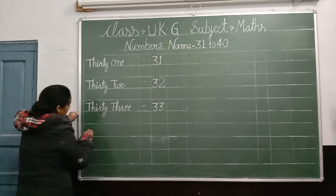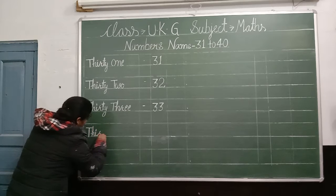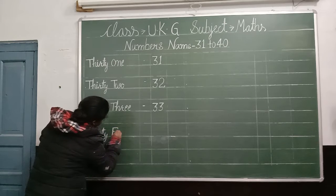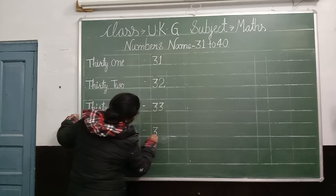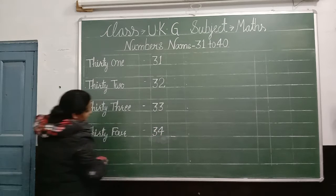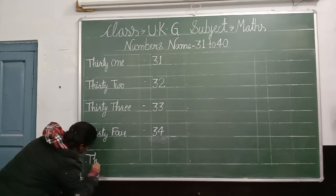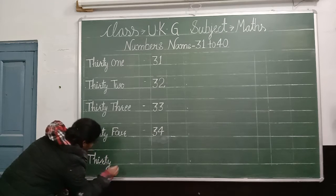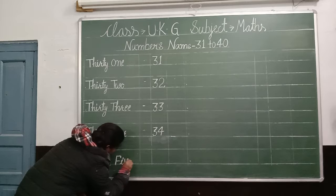Thirty-three: T-H-I-R-T-Y. 33. Thirty-four: T-H-I-R-T-Y F-O-U-R. 34. Thirty-five: T-H-I-R-T-Y F-I-V-E. 35.